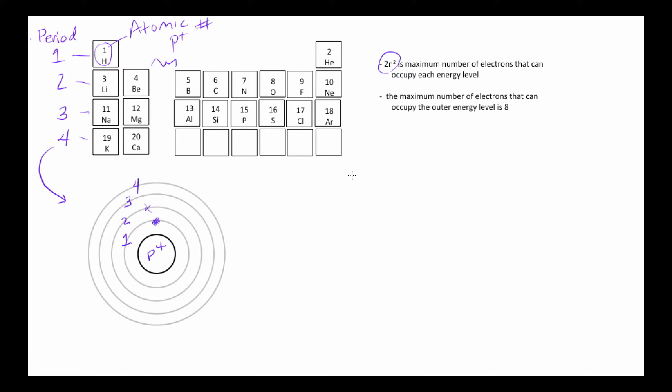There is a formula that tells us what the maximum number of electrons in each of these energy levels can be, and that's important. So the formula is 2n squared, and n is these numbers over here. So n is 4, 3, 2, or 1. So we're going to make ourselves a table.